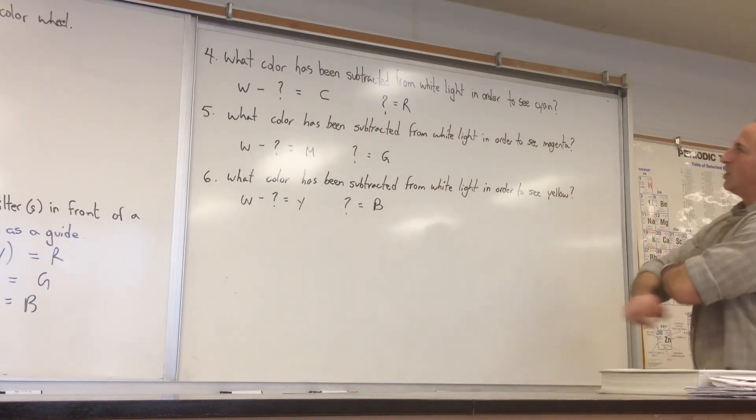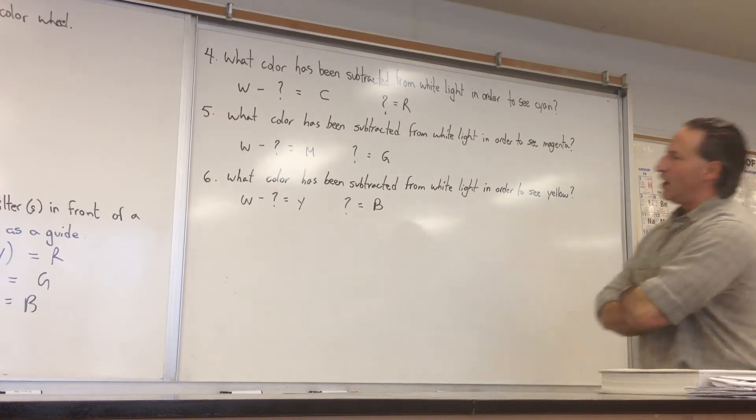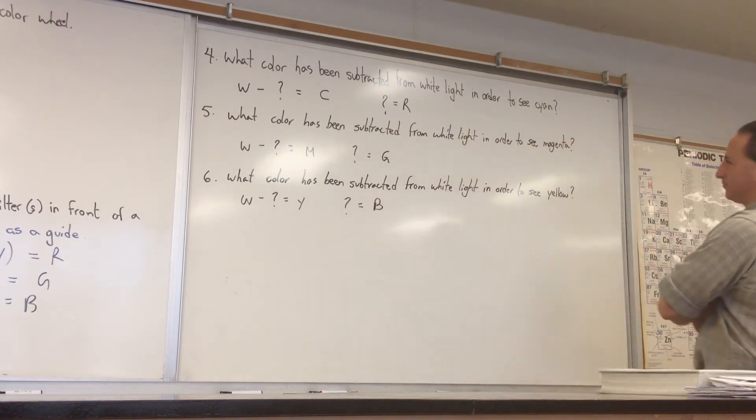When we ask what color has been subtracted from white light in order to see cyan, the answer is red. What color has been subtracted from white light in order to see magenta? The answer is green. Finally, what color has been subtracted from white light in order to see yellow? The answer is blue.